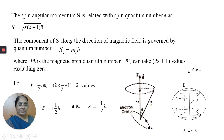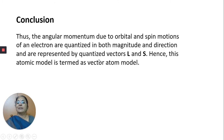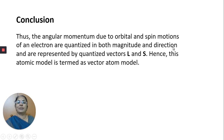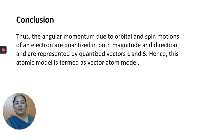Thus, the angular momentum due to orbital and spin motions of an electron are quantized both in magnitude and in direction, and are represented by the vectors L and S. Because direction is involved, this atomic model is called the vector atom model. I hope you have understood this concept and the features of vector atom model. Thank you.